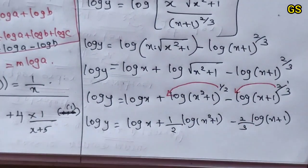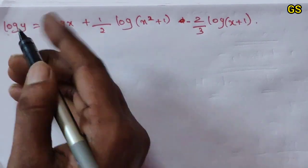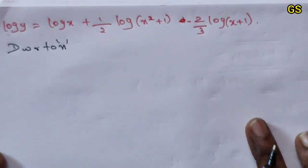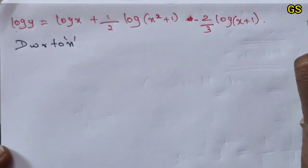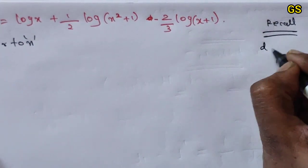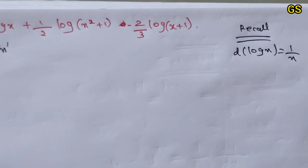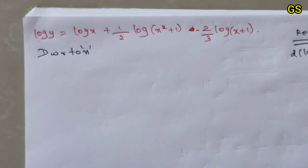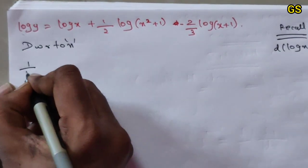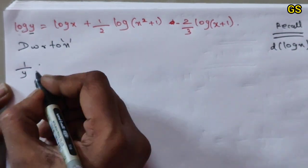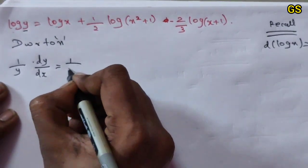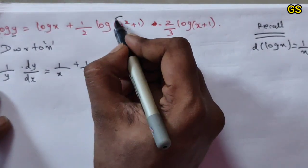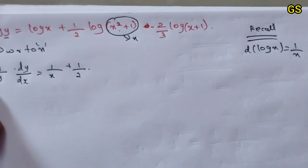Now differentiate both sides. Recall log x differentiation formula: d/dx of log x equals 1/x. Differentiating log y gives 1/y · dy/dx. For the term with log(x²+1), apply the chain rule. The 1/2 factor comes forward.